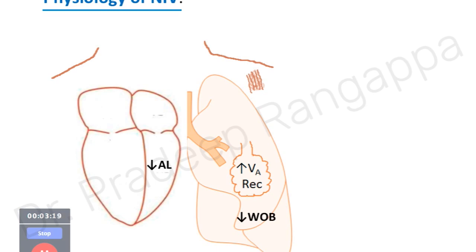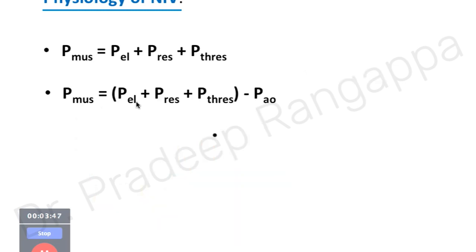Reducing afterload becomes a very important adjunct to all therapeutic modalities instituted in heart failure — it has a bearing on reducing the load on the heart. NIV also stabilizes the respiratory muscles: in trauma patients where respiratory mechanics are impaired, it helps stabilize respiratory muscles and accentuates the ability to breathe better.